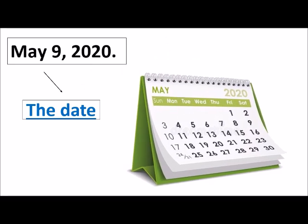The date comes at the end of the application. The month is written out completely with a capital letter, then write the date followed by a comma, and the year is written at the end followed by a full stop. For example, 'May 9, 2020 full stop.' This part of the application is called the date. Remember, you need to write the full spellings of the month — for example, if it is September, you write S-E-P-T-E-M-B-E-R.